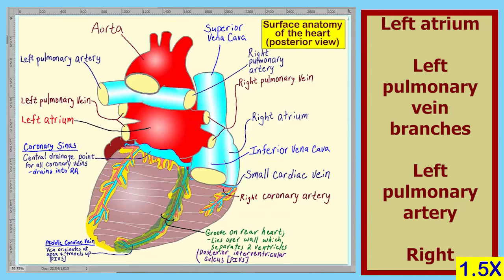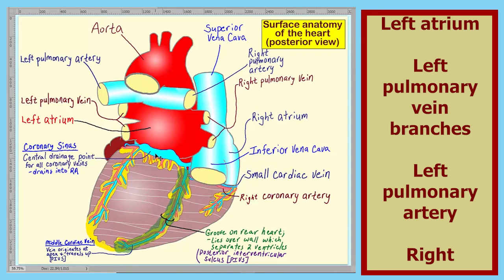Let's summarize the surface anatomy of the posterior heart. Here we have the aorta, the superior vena cava, the right pulmonary artery, branches of the right pulmonary vein, and the right atrium. The groove here is the posterior intraventricular sulcus. The vein in the sulcus is the middle cardiac vein. The central drainage point for all coronary veins is the coronary sinus, shown here.